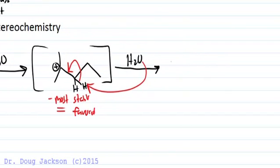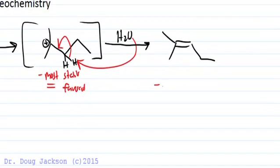We form the most stable cation. E1 elimination is not like E2 in that it doesn't require the anti-periplanar relationship of the beta-hydrogen to the leaving group.